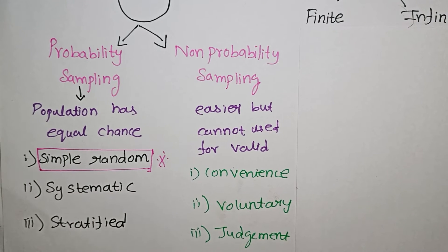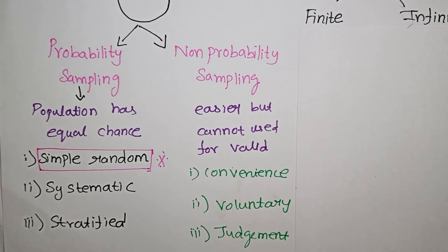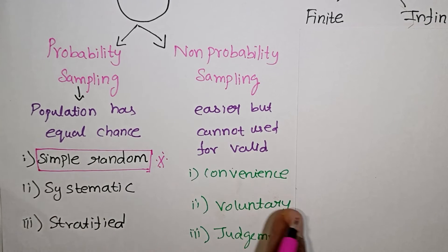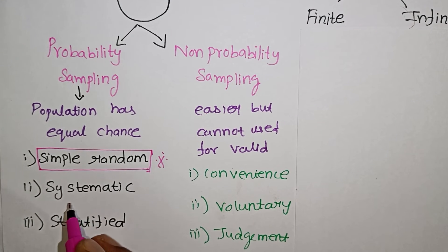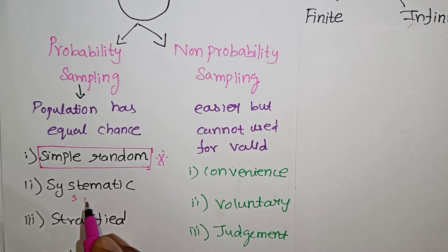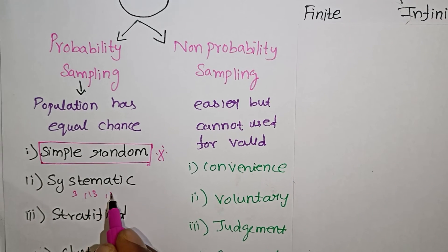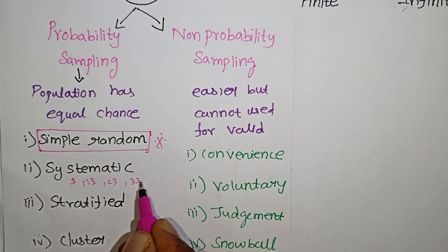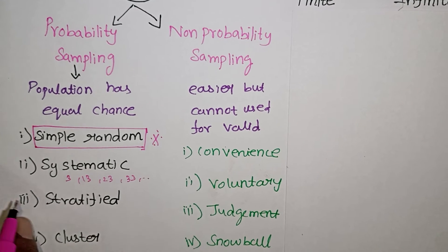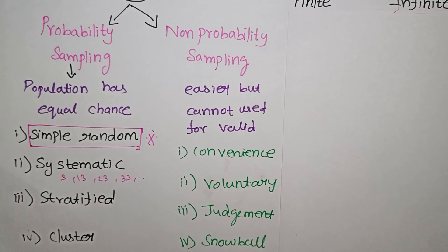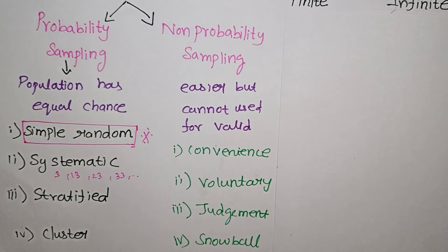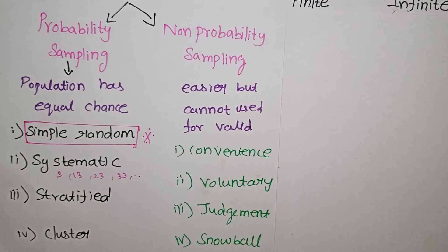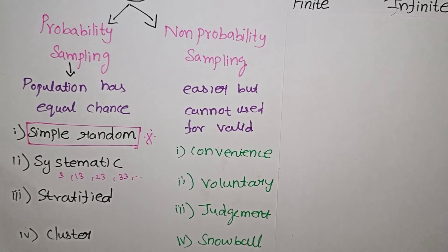If you randomly select a starting number — say 3 — then your selections would be 3, 13, 23, and so on, giving you 100 numbers. That is systematic sampling.